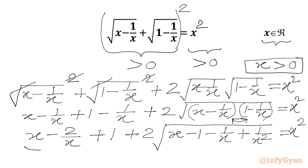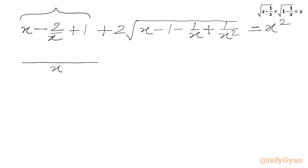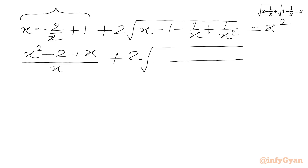Now we will be taking LCM. We will write our equation with common denominator x, so in the numerator we need to write x² − 2 + x. Then we have plus 2 times square root of, and in the denominator we will be writing x². So in the numerator we need to write x³ − x² − x + 1.